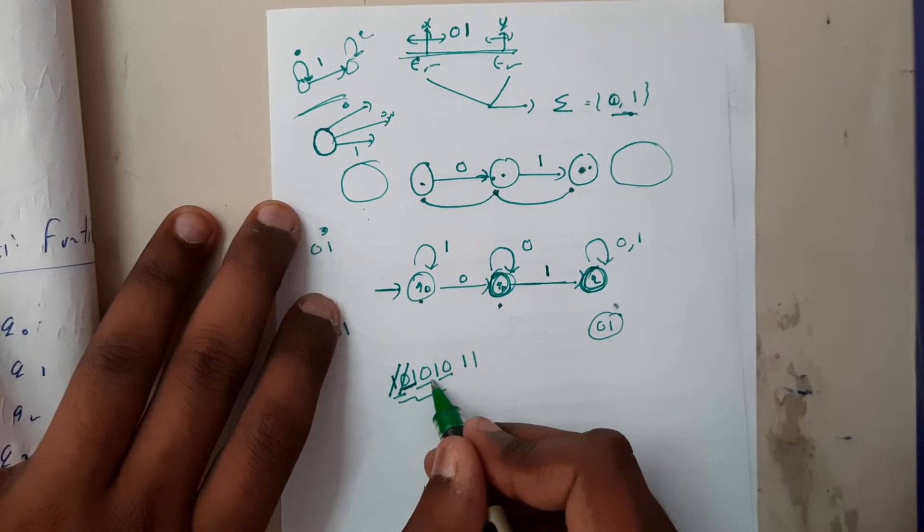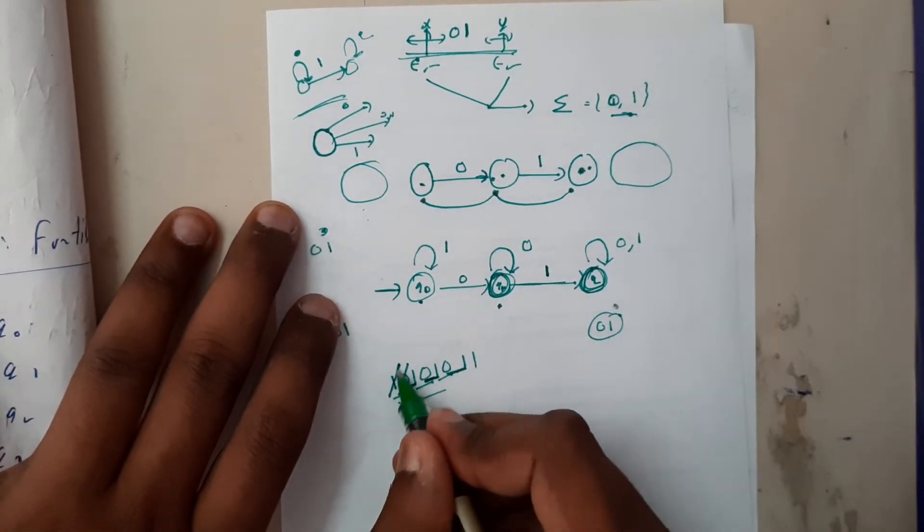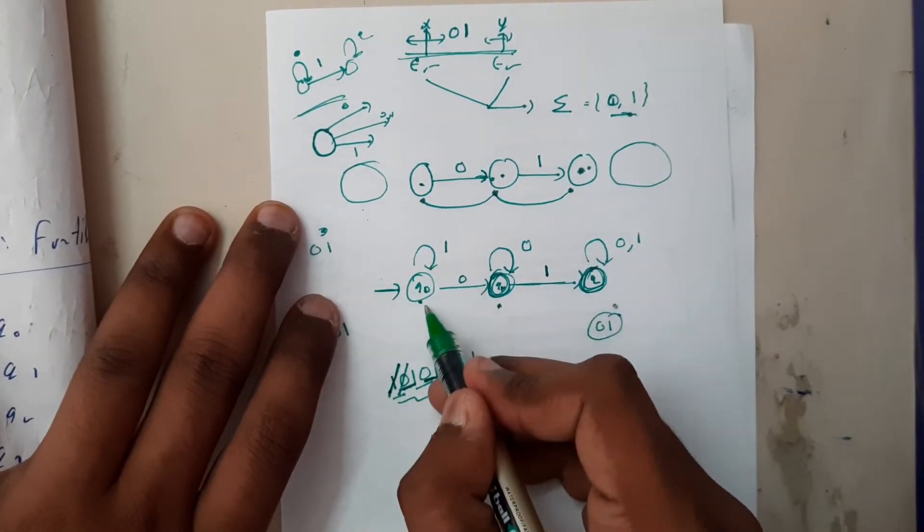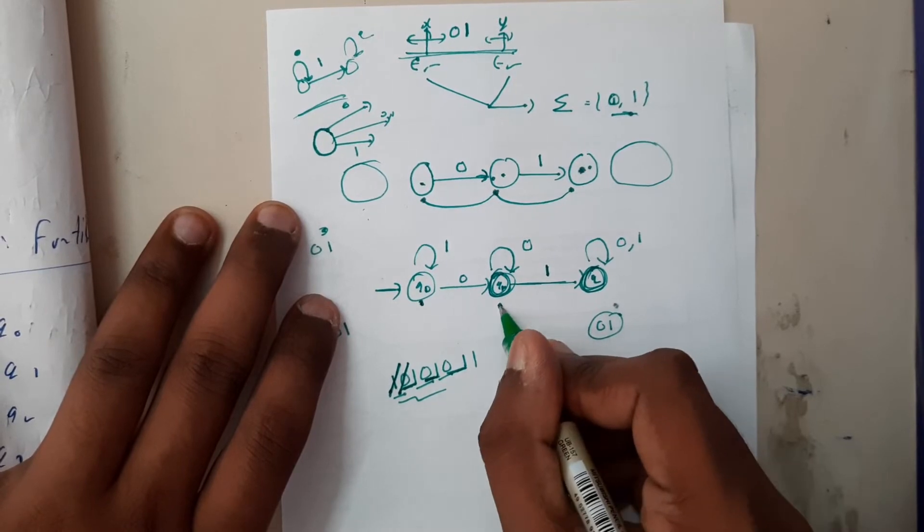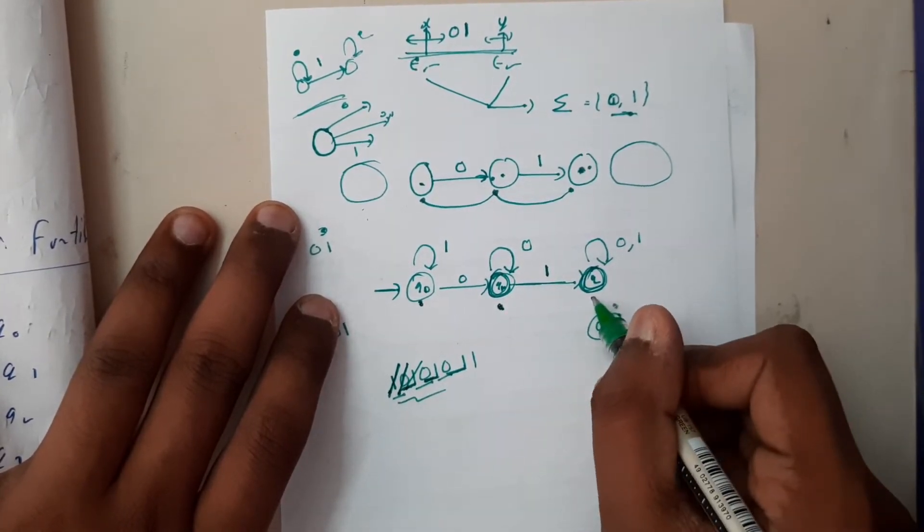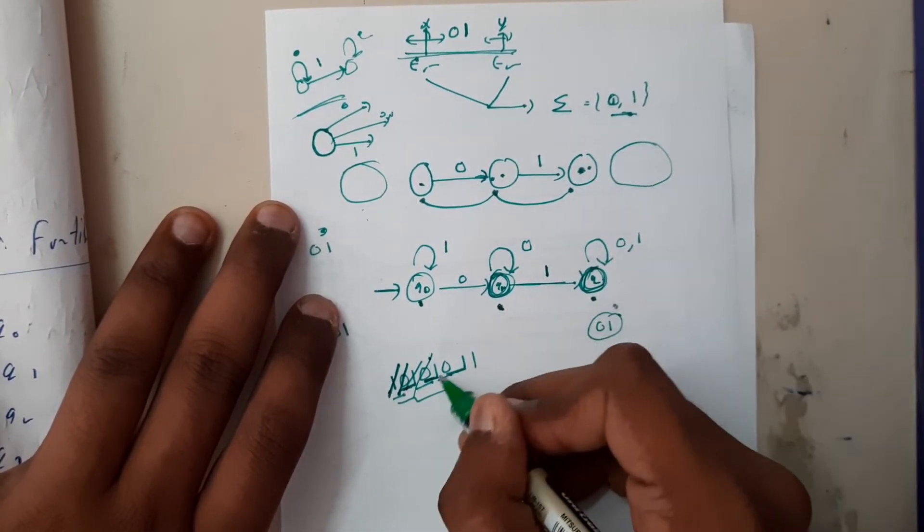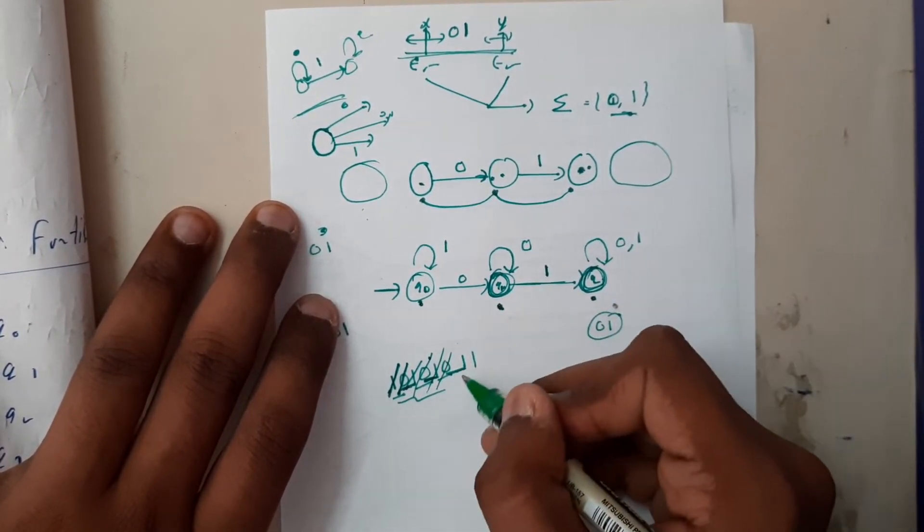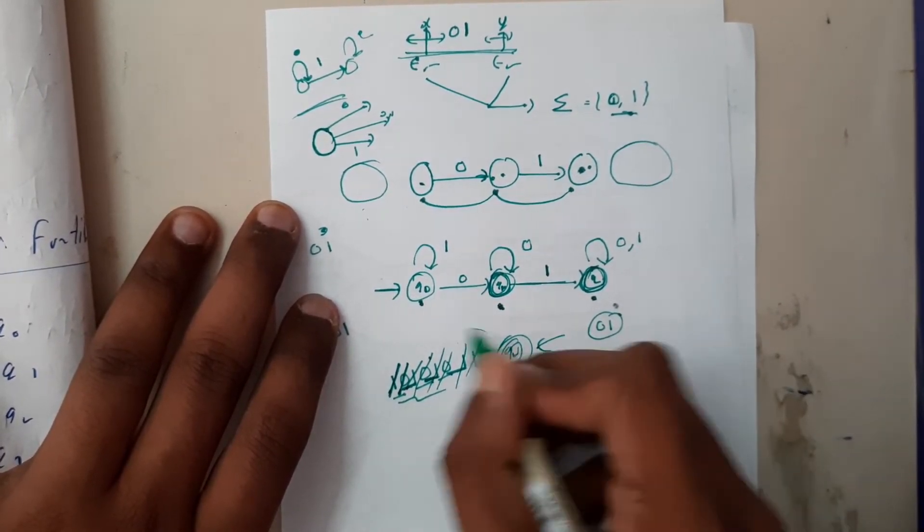Initially it takes one, it will move here. It takes zero, then we are having only few. Initially it takes one, it takes a self loop and stays in q0. After that zero, it moves to q1. After that one, it moves from q1 to q2.